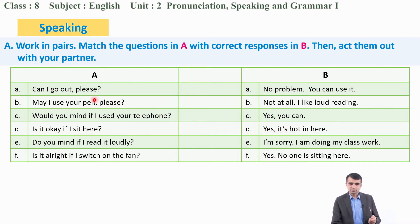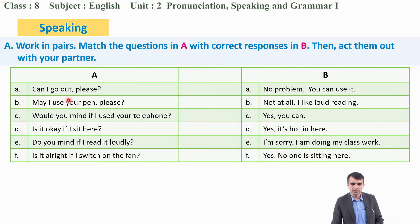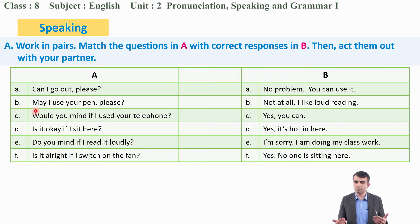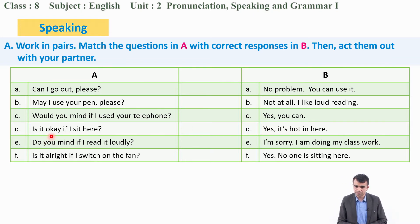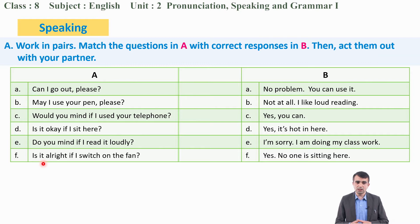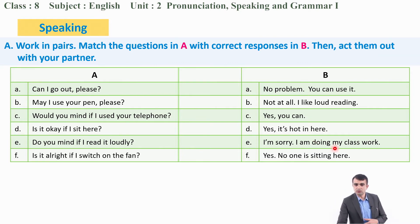There are six questions: A — Can I go out, please? B — May I use your pen, please? C — Would you mind if I used your telephone? D — Is it okay if I sit here? E — Do you mind if I read it loudly? F — Is it alright if I switch on the fan? Under column B, the responses are: A — No problem, you can use it. B — Not at all, I like loud reading. C — Yes, you can. D — Yes, it's hot in here. E — I'm sorry, I'm doing my classwork. F — Yes, no one is sitting here.